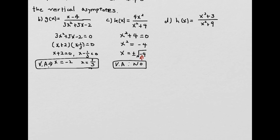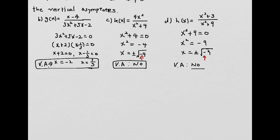Example 1d: h of x. We do the same thing — let the denominator equal to 0 and we get negative 9 on the other side. Using the square root property, we get the square root of negative 9, which again has a negative inside the square root. This is another imaginary unit, meaning there is no real number solution. So the vertical asymptote is none.